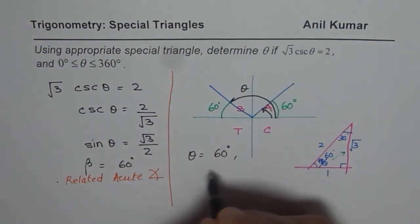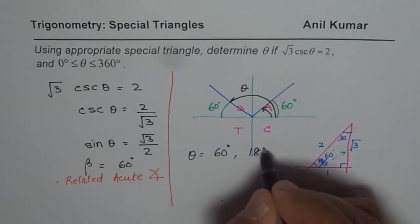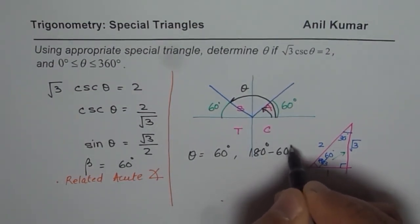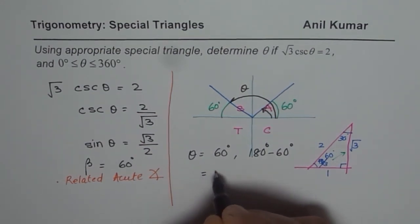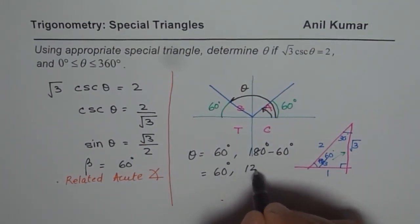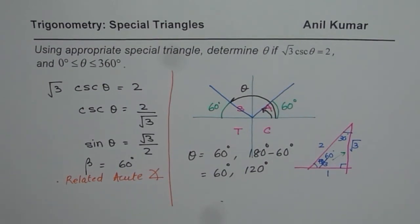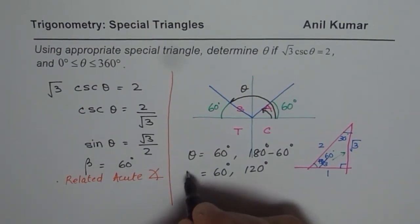Which is 180 minus 60. So the other answer is θ = 180° - 60°. We have two solutions: one is 60 degrees, the other is 120 degrees. These are the two answers for the given question.